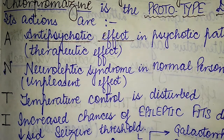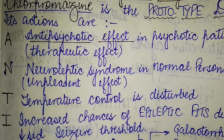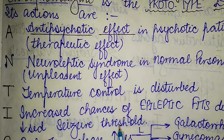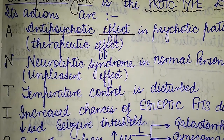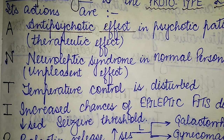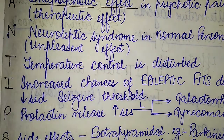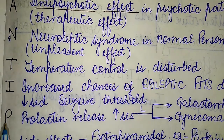The I of anti-psychotic stands for increased chances of epileptic fits due to a decreased seizure threshold. This is another adverse effect — the seizure threshold value is decreased when anti-psychotic drugs are used.